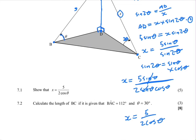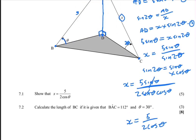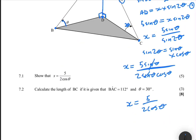Question 7.2 says: calculate the length of BC, given that angle BAC is 112 degrees and theta equals 30 degrees. On triangle ABC we have angle BAC equal to 112 degrees, the length AC which is X that we just calculated, and AB which is 5.